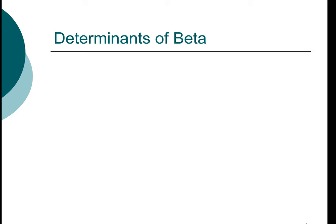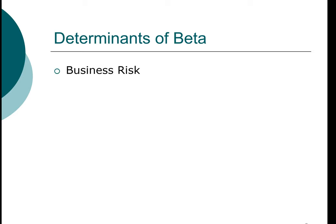Beta is a systematic risk. If you look at the risk of a firm, it has two major components. The first is business risk — we distinguish that from financial risk. Business risk has to do with the day-to-day operation of the firm, and there are two major components of business risk.